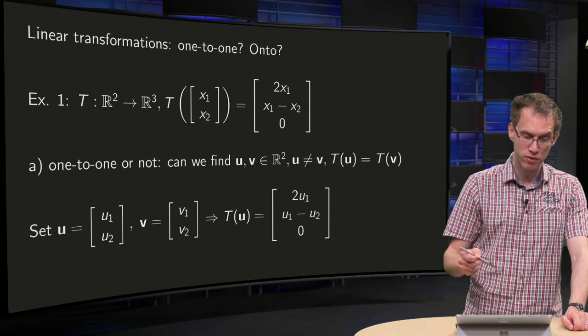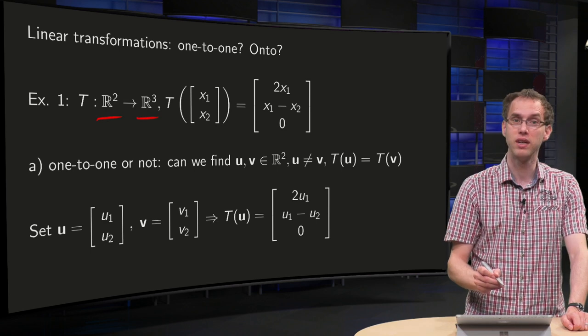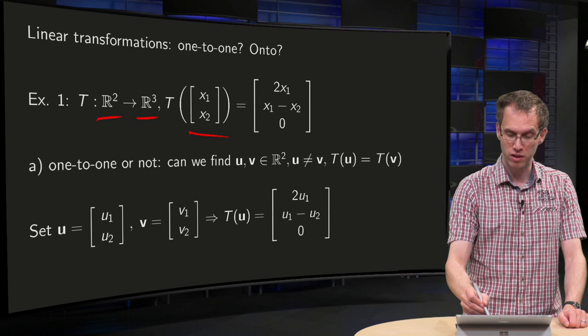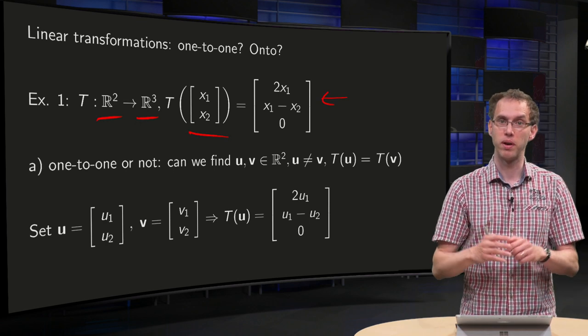First, we take a transformation T from R² to R³. T of a vector in R², (x₁, x₂), is this vector: 2x₁, x₁ minus x₂, and 0.